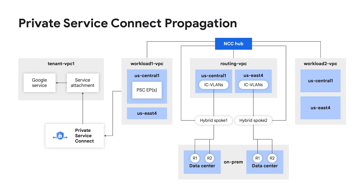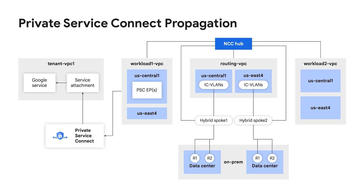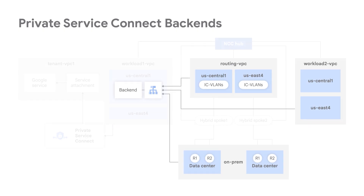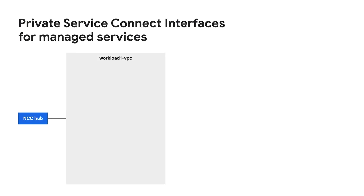By enabling PSC propagation on the NCC hub, all PSC endpoints become fully routable in all VPC spokes and via hybrid routing. PSC propagation doesn't apply when using PSC backends, because load balancers are fully routable anyway.